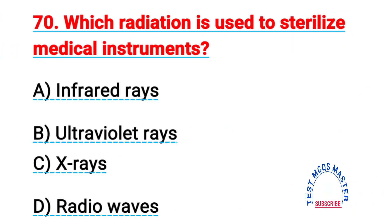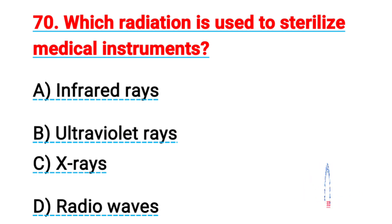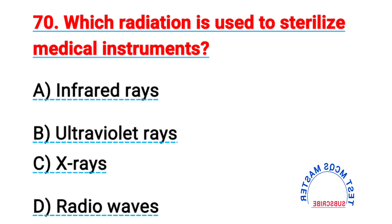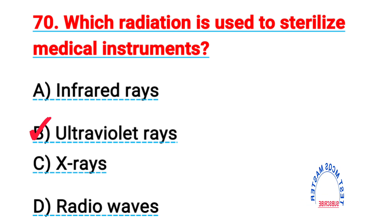Question number seventy: which radiation is used to sterilize medical instruments? The right answer is B, ultraviolet rays.